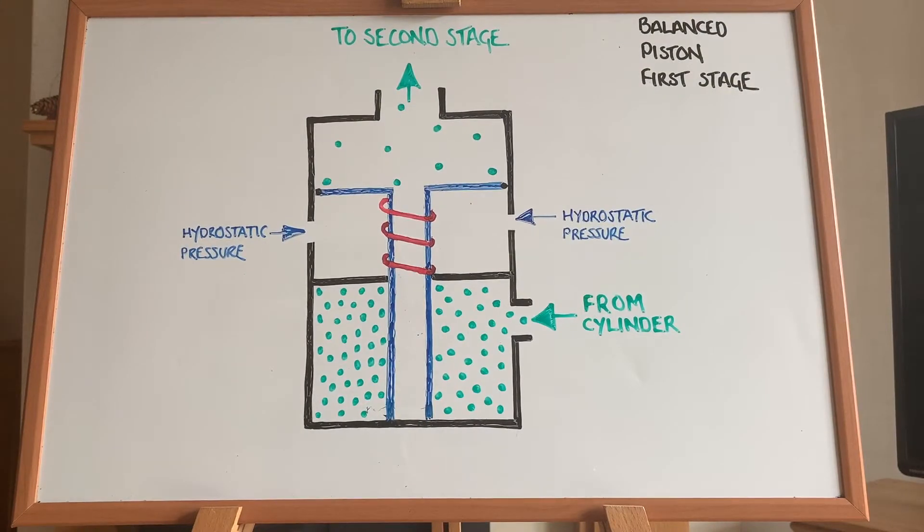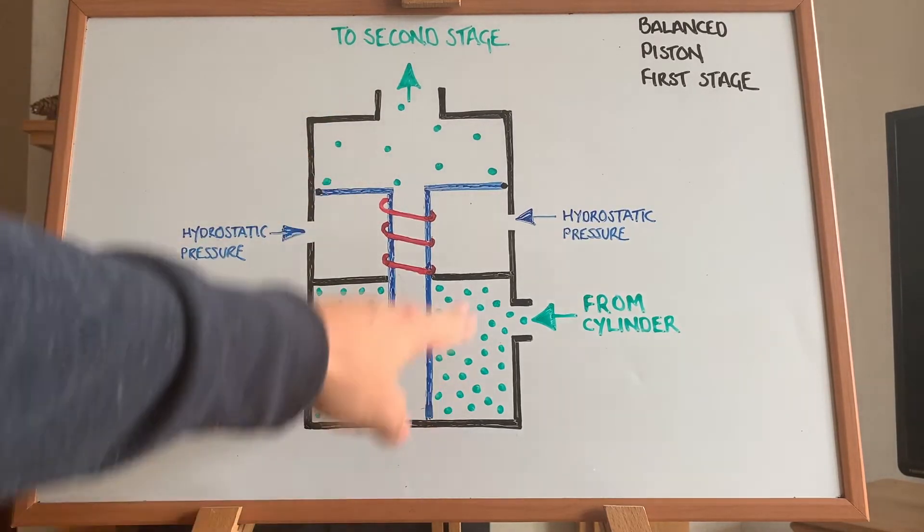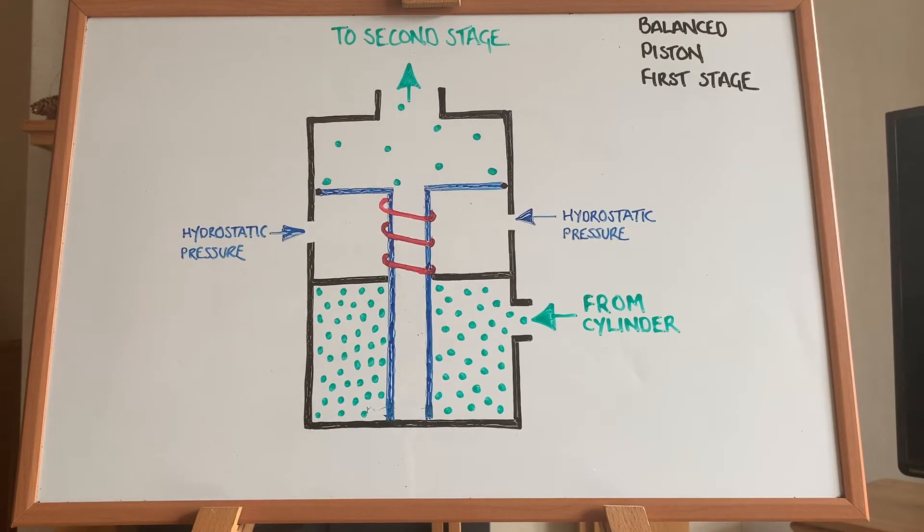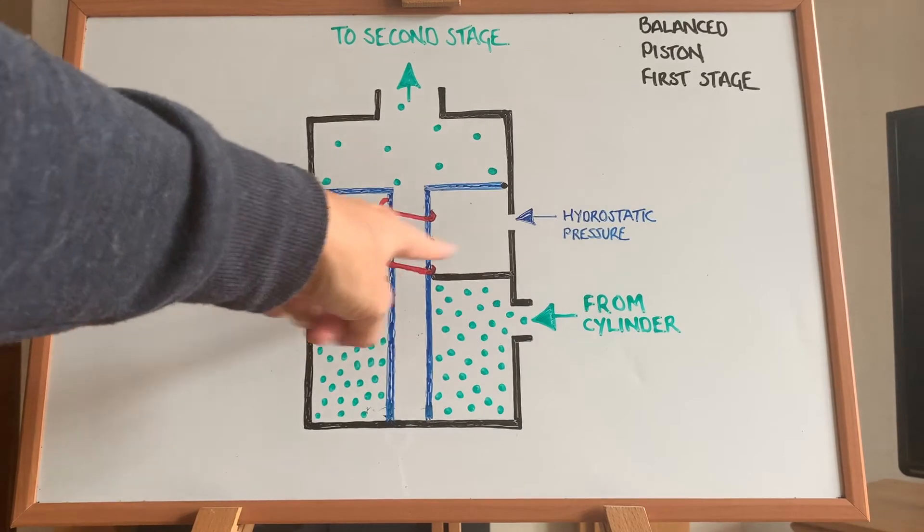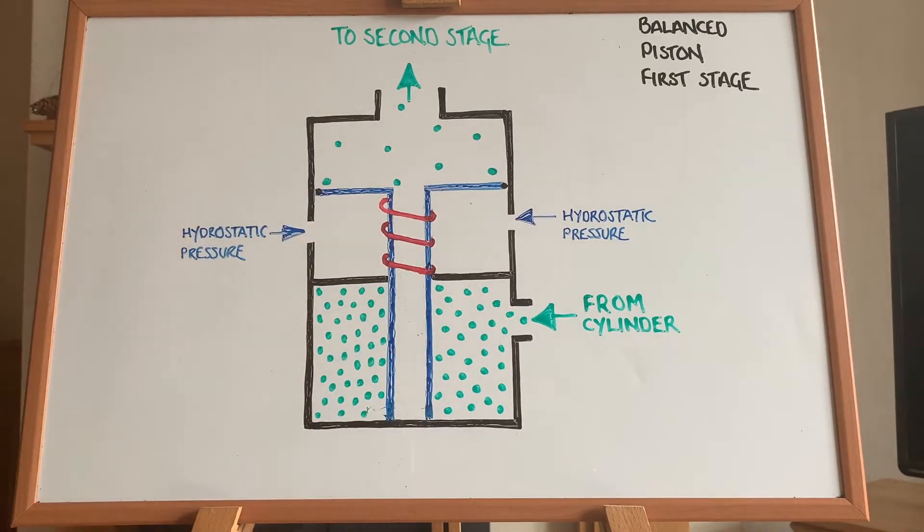Okay, so what we've got here is a non-brand specific depiction of a balanced piston first stage regulator. So before we get started on the mechanics of it, I'll just give you a quick rundown on what we're looking at. The thick black lines that we're seeing, this is the structural parts of the first stage. So we have the outer shell here, as well as an internal separation of chambers. These are static non-moving parts.